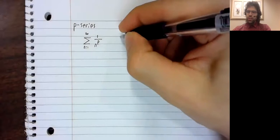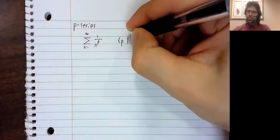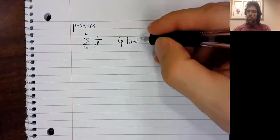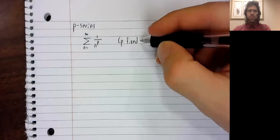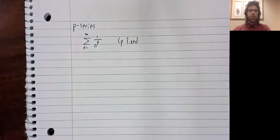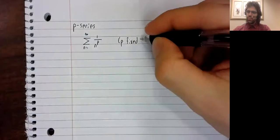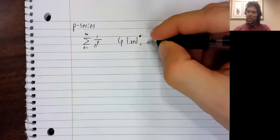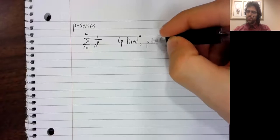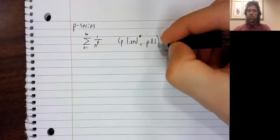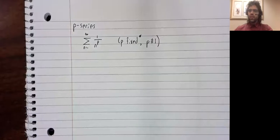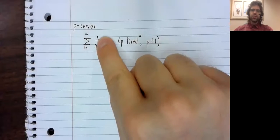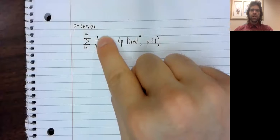It is a series that looks like this: P is a fixed number. Could be positive, could be negative, could be a fraction. The only real restriction we have on P is that it isn't one. If P is one, this is the harmonic series and we already know that it diverges.